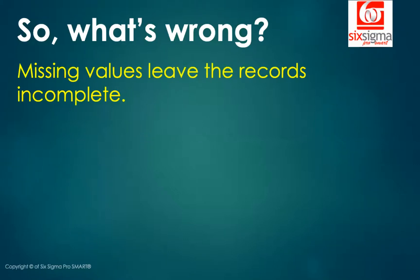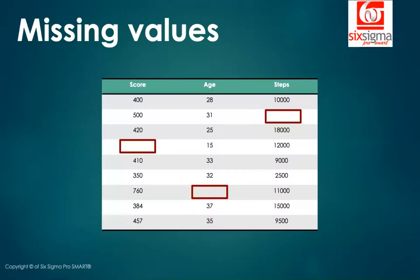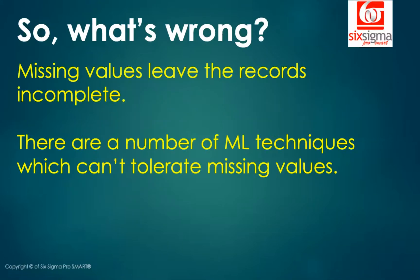If you look at the example here, and if we assume that every single row represents an individual, you'd realize that for someone, you don't know how many steps the person walks. For someone, you don't know what's the health score. And for someone, you don't know what the age is, right? And all these are critical pieces of information. So your record is incomplete. Not only this, there are a number of machine learning techniques which can't tolerate missing values. They simply won't proceed with the data that's full of missing values. So we'll have to find our way through it.